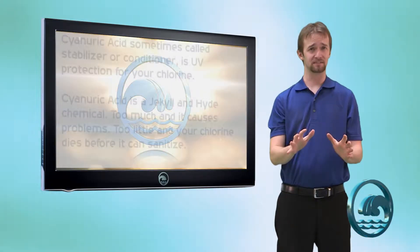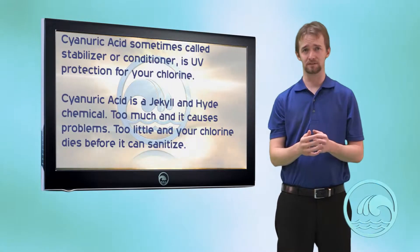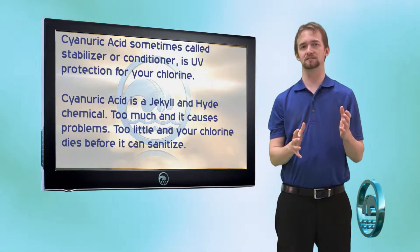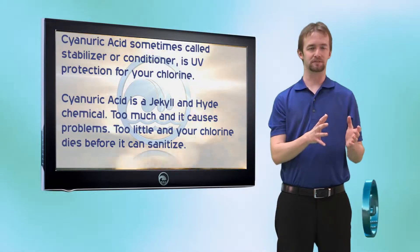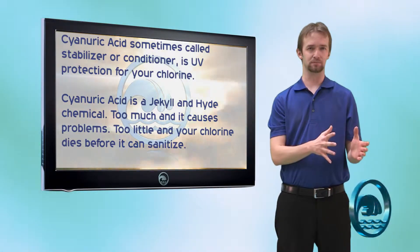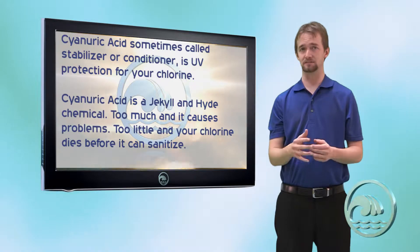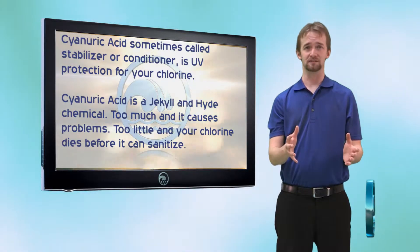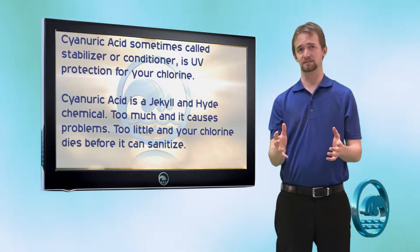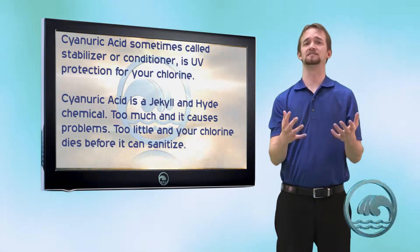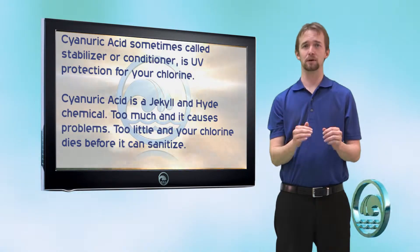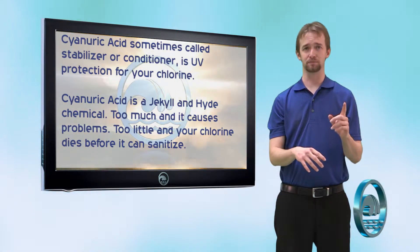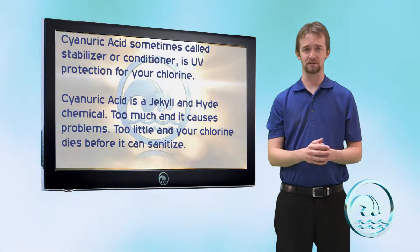Cyanuric acid — I touched on this a little bit in the chlorine section. Cyanuric acid is also referred to as stabilizer in the pool industry, or conditioner sometimes. Essentially, what it does is it acts as sunscreen for your chlorine, protecting your chlorine molecules from the UV rays of the sun.